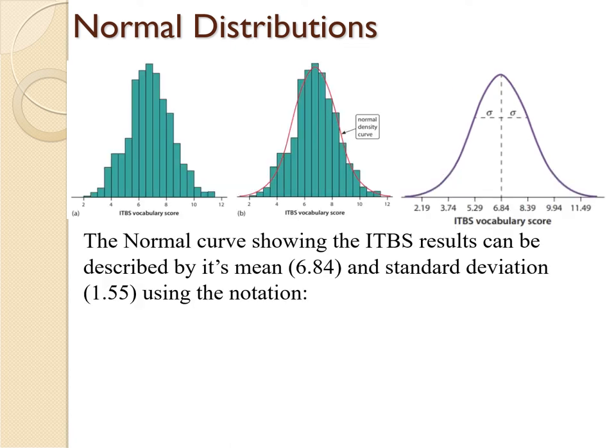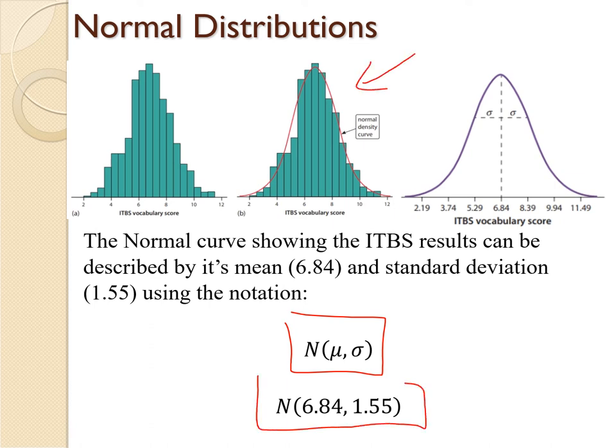Applying that all to this histogram, the ITBS basic skills test results can be described fully with just two numbers. We need to know the mean, 6.84, and the standard deviation, which in this case is 1.55. We can describe a normal curve using the notation N parentheses, and then we're going to write the mean, comma, standard deviation. For this curve, we would write it as N(6.84, 1.55), which is the mean right in the middle and standard deviation of 1.55. That's the average difference of each test score from the mean of 6.84.